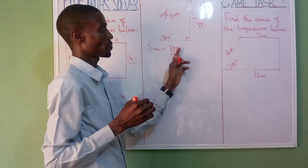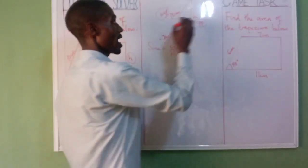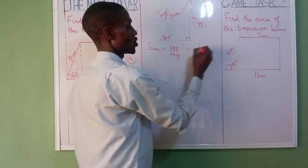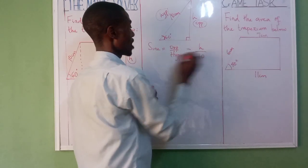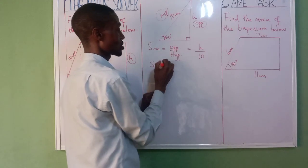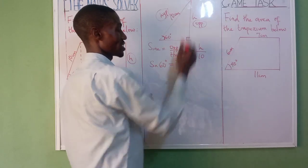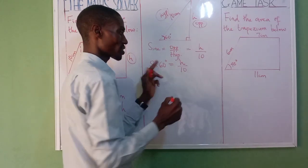Opp means opposite, then this your hypotenuse. According to this, my opposite is h over hypotenuse is 10, and we are having sine 60. The angle is 60 equal to height over 10. So what is sine 60?